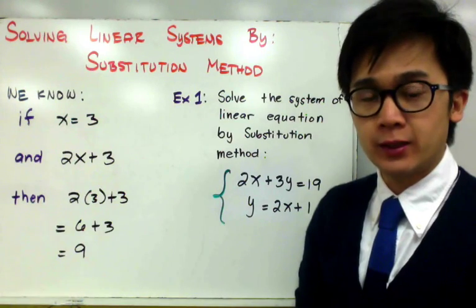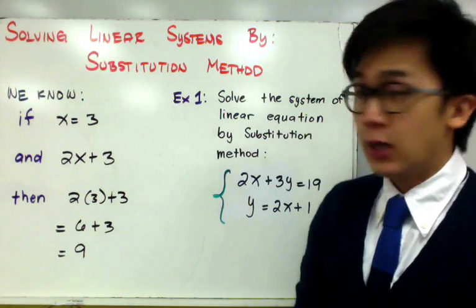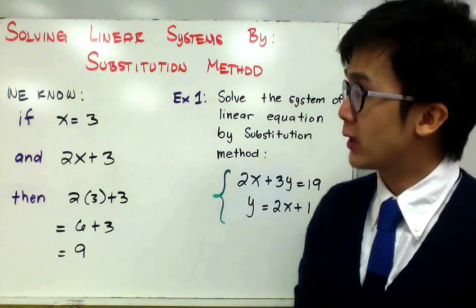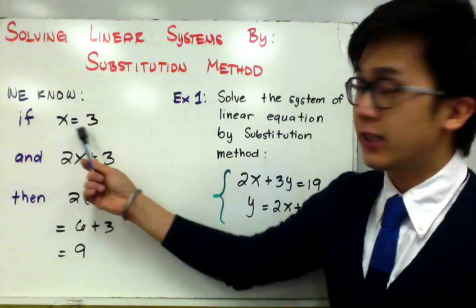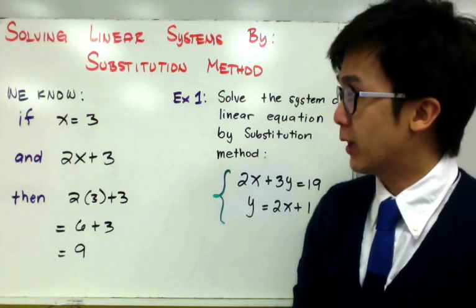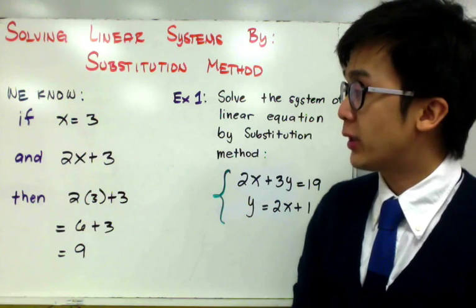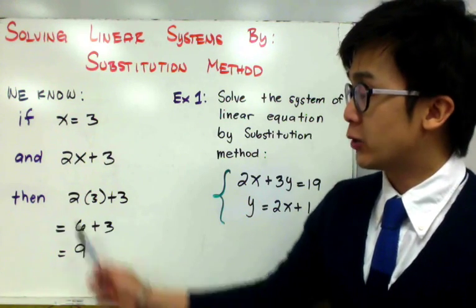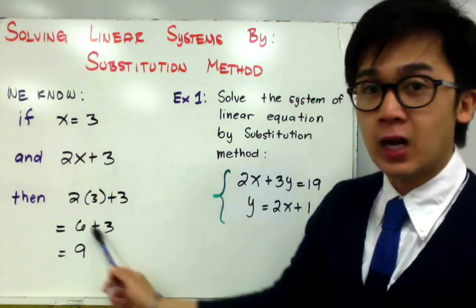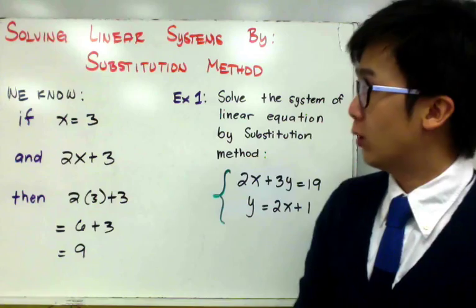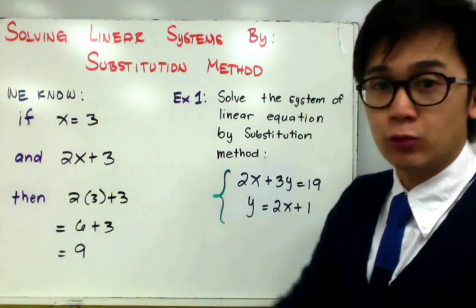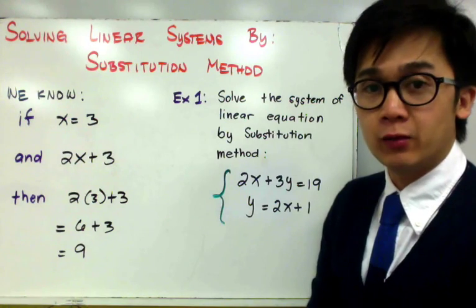We are now using the substitution method in solving a linear system. In basic algebra, we know that if we are given a function, let's say 2x plus 3, and x is equal to 3, by the substitution method we replace the value of x by the number 3 to simplify the expression, giving us 9. So 2x plus 3, when x is equal to 3, is simply 9. We're going to use that basic skill in algebra in solving our linear system.